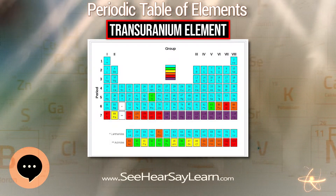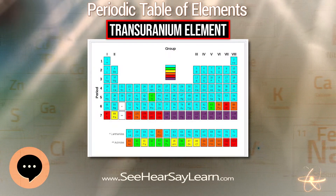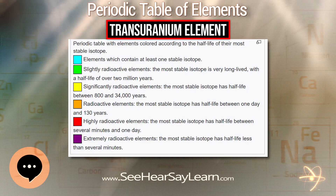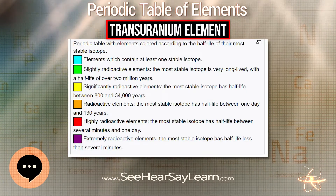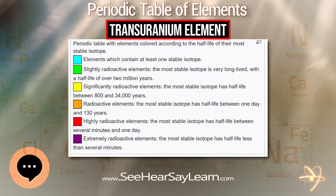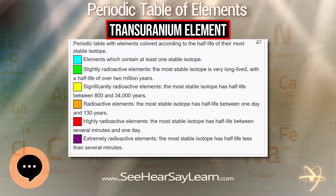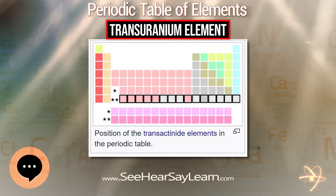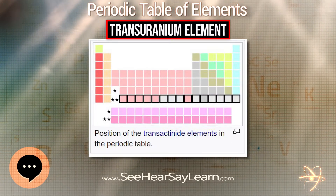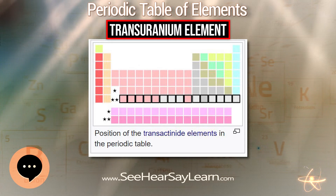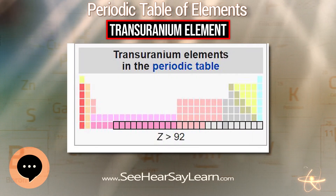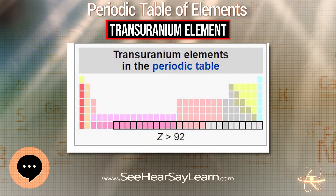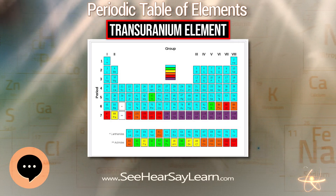Transuranium elements may be utilized to synthesize other super heavy elements. Elements of the island of stability have potential important military applications, including the development of compact nuclear weapons. The potential everyday applications are vast — the element americium, for example, is utilized in devices like smoke detectors and spectrometers.